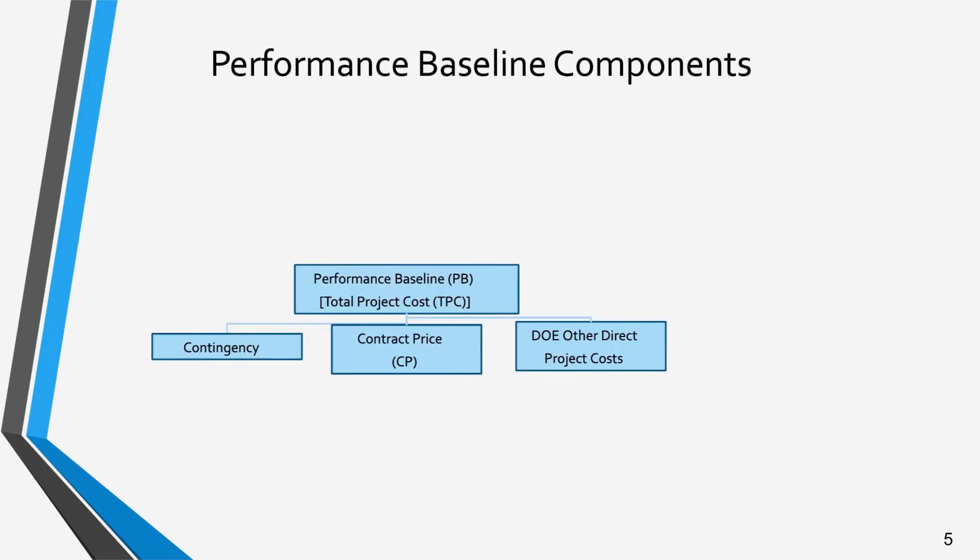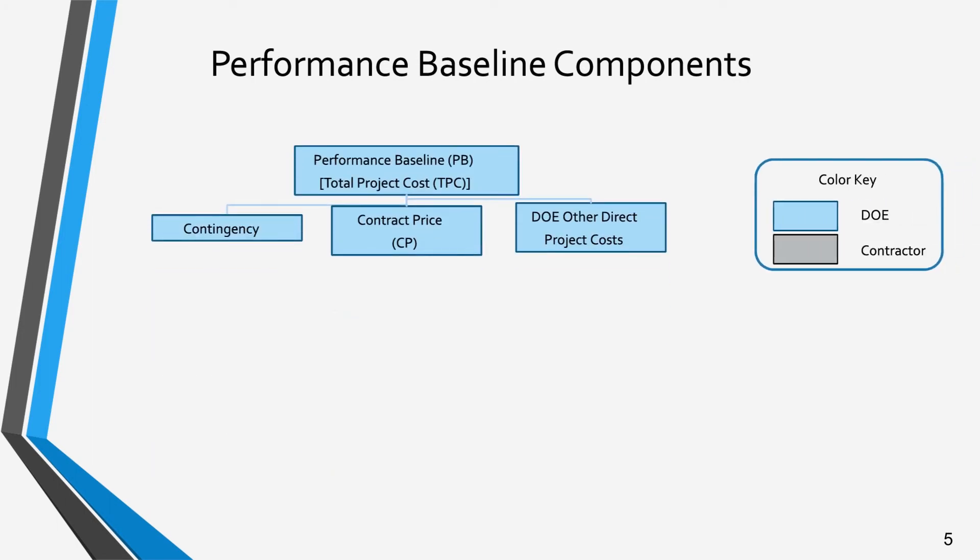The graphic on this slide provides a context in which to understand the components of the performance baseline, or PB. Those elements in light blue are controlled by the DOE and the elements in gray by the contractor. Starting at the top, the performance baseline represents the total project cost for DOE. This is broken down to three elements: DOE held contingency, the contract price issued to the contractor, and DOE held reserves for other direct project costs.